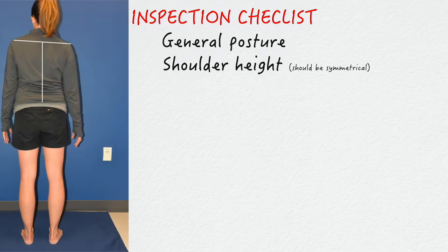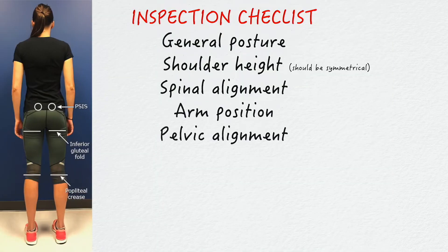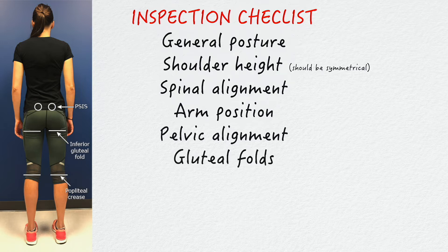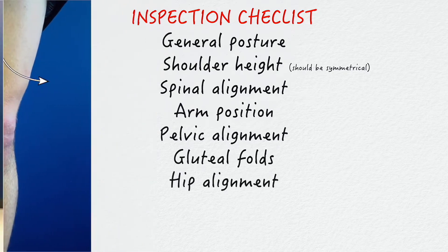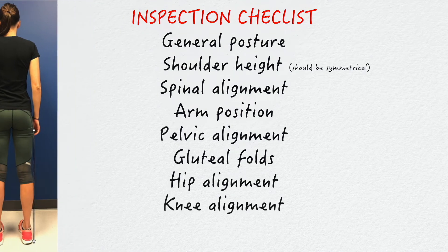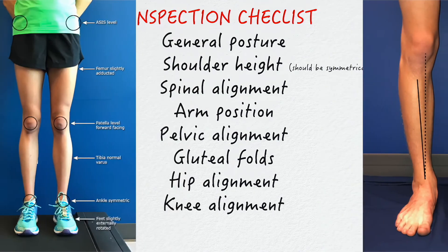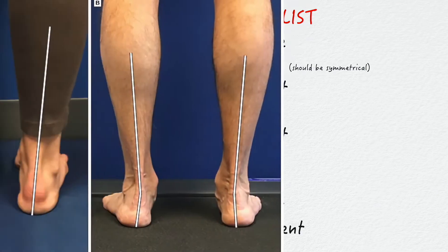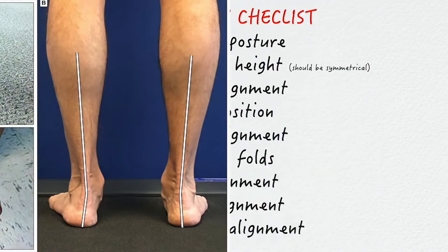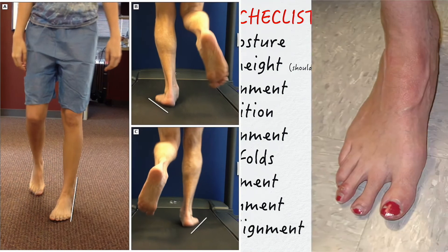The checklist covers: general posture; shoulder height — both should be symmetrical; spinal alignment; arm position; the pelvis, with particular focus on the anterior and posterior superior iliac spines and the gluteal folds — the heights of these structures should be symmetrical; the hip, whether it is in internal or external rotation and the greater trochanters; whether there is genu varus, genu valgus, patellar tilt or genu recurvatum; tibial varus; lower extremity joint alignment; external tibial torsion; heel varus or valgus; foot pronation or supination; pes cavus or pes planus (high arch or flat foot postures); a toe-in or toe-out stance; and forefoot deformities such as a bunion.